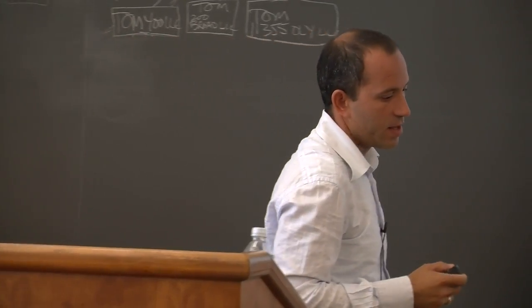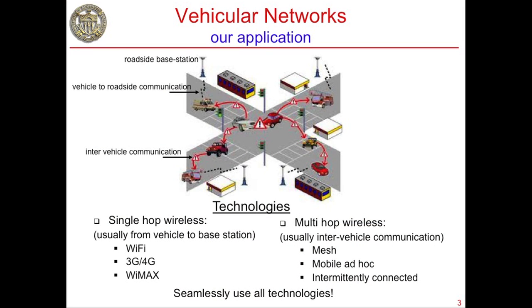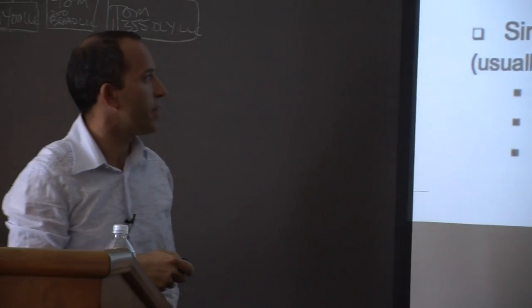Our application is vehicular networks. In a typical scenario, an accident or police car interception results in multi-hop communication paths — one vehicle talks to another via inter-vehicle communication, and that vehicle talks to a roadside pole connected to the wider network. An ambulance talking directly to a roadside base station is a single-hop vehicle-to-roadside case. The key is seamlessly using both single-hop and multi-hop technologies.